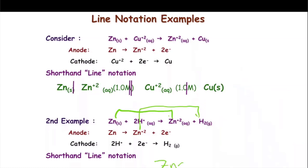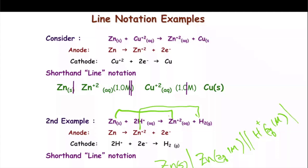Zinc aqueous — you can put one molar or zinc sulfate. Then there's a salt bridge (double line). The reduction is H⁺ aqueous (one molar), phase boundary, H₂ (one atmosphere), another line, and then an inert electrode, because hydrogen is a gas and needs a solid material to facilitate electron transfer. It could be a platinum wire. A lot more quicker way of writing an electrochemical cell — these line notations. You should be able to read a line notation and diagram an electrochemical cell.